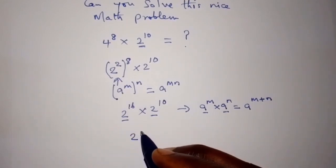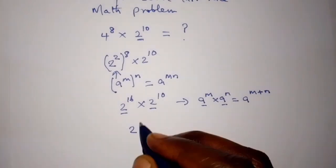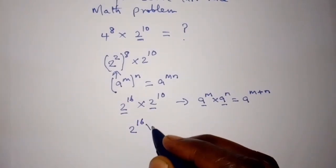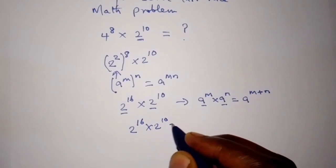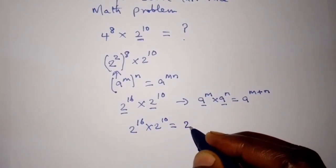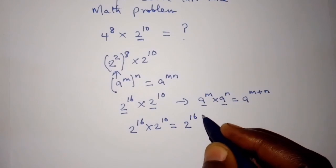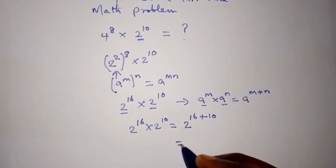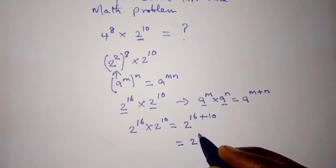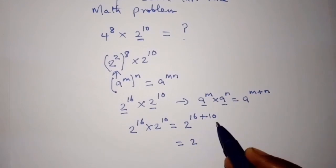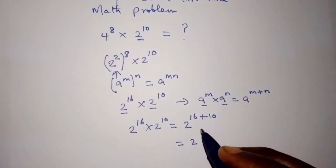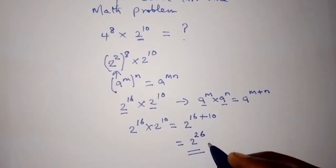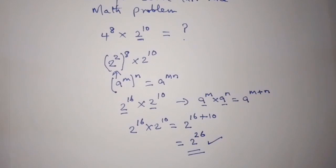So 2 to the power of 16 times 2 to the power of 10 is equal to 2 to the power of 16 plus 10, which is 2 to the power of 26. And this is our final answer.